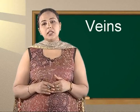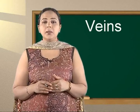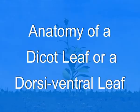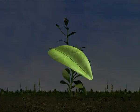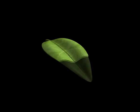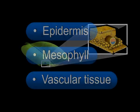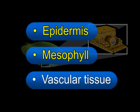Let us now study the anatomy of a typical dorsiventral leaf of a dicot plant. A transverse section through the midrib region of a typical dorsiventral leaf shows different structures: epidermis, mesophyll and vascular tissues. Let us discuss these structures one by one.